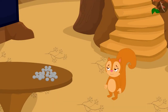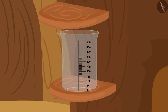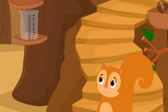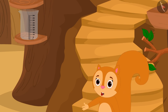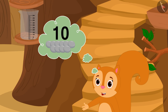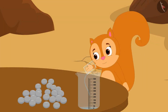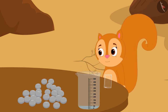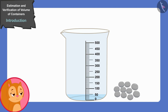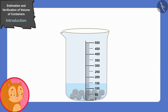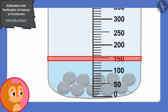Just then, her eyes went to the measuring cup kept in her house. Oh yes! With the help of this measuring cup, I will first find out what the volume of 10 bottle caps is. Chanda filled 50 ml of water in that measuring cup. Then she put 10 covers in that measuring cup and the water level came up to 150 ml.